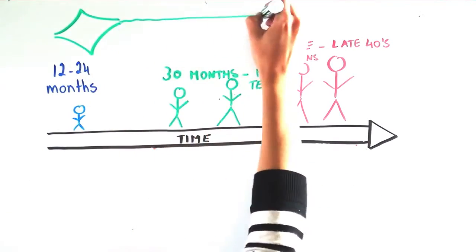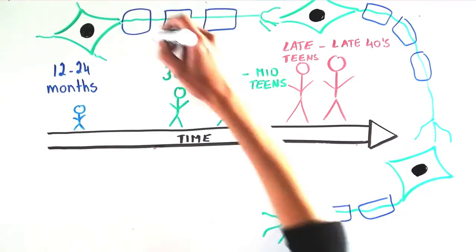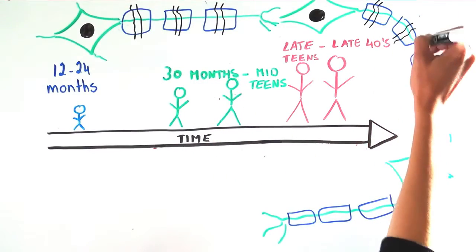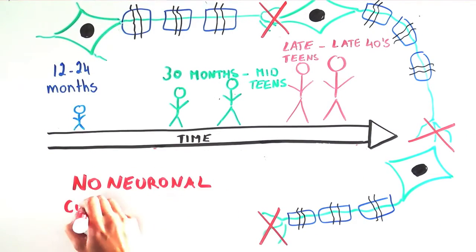Interestingly, even though these different types of MLD have very different symptoms and times of onset, the underlying biology is the same. Degradation of the myelin covering around nerve occurs, the nerves can no longer communicate with each other, and symptoms of MLD result.